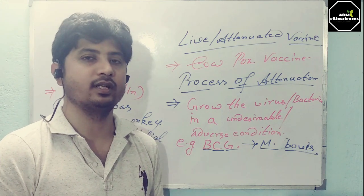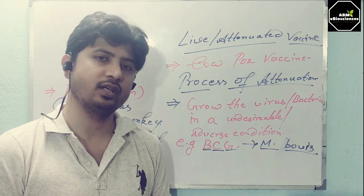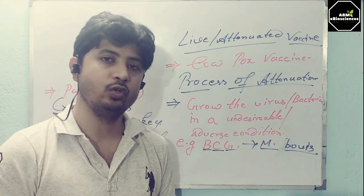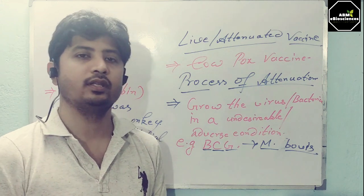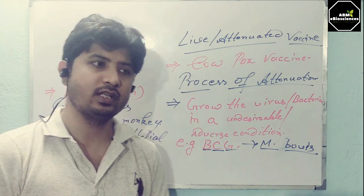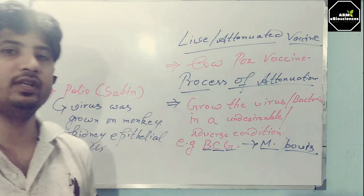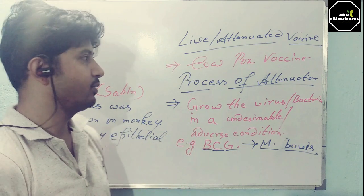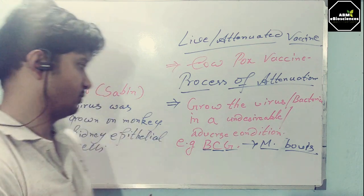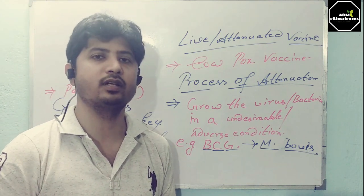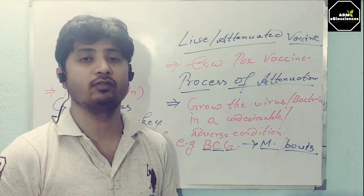This oral polio vaccine is a trivalent form which needs more than one dose because during induction inside your body the three viruses interfere with each other's replication process. That's why multiple doses are needed to form the actual memory and antibody response. Similarly for measles, the virus can be grown on different cell lines, and after several subcultures or passages a mutant form is obtained which is used for the vaccine purpose.